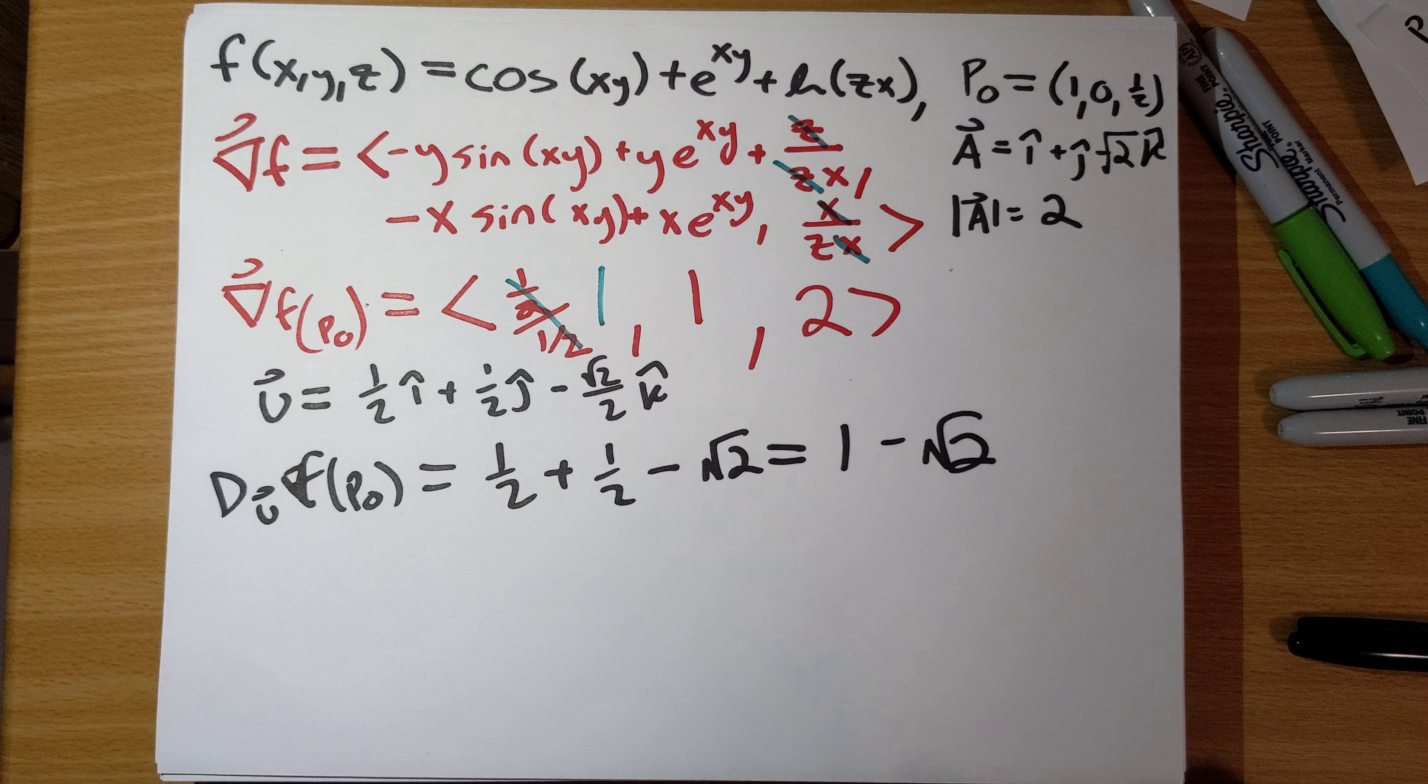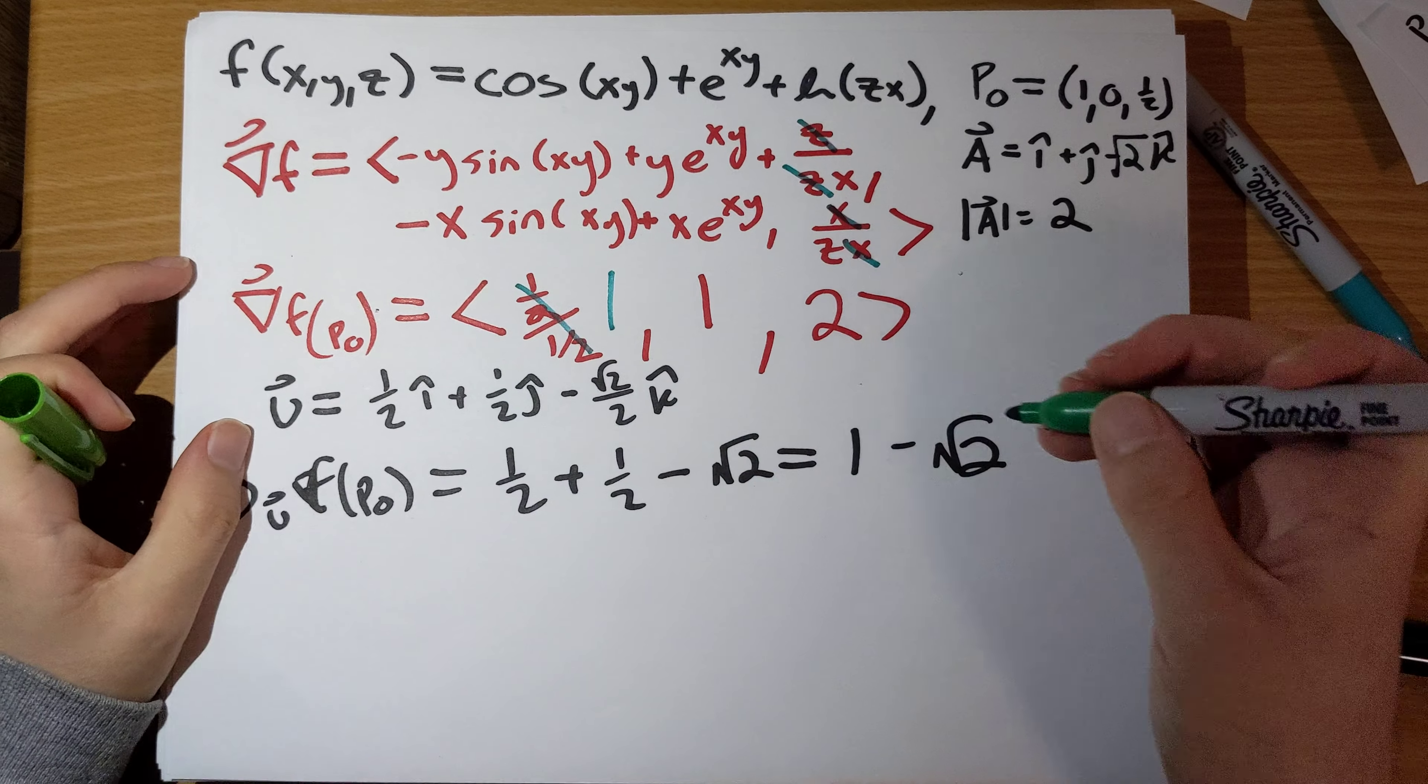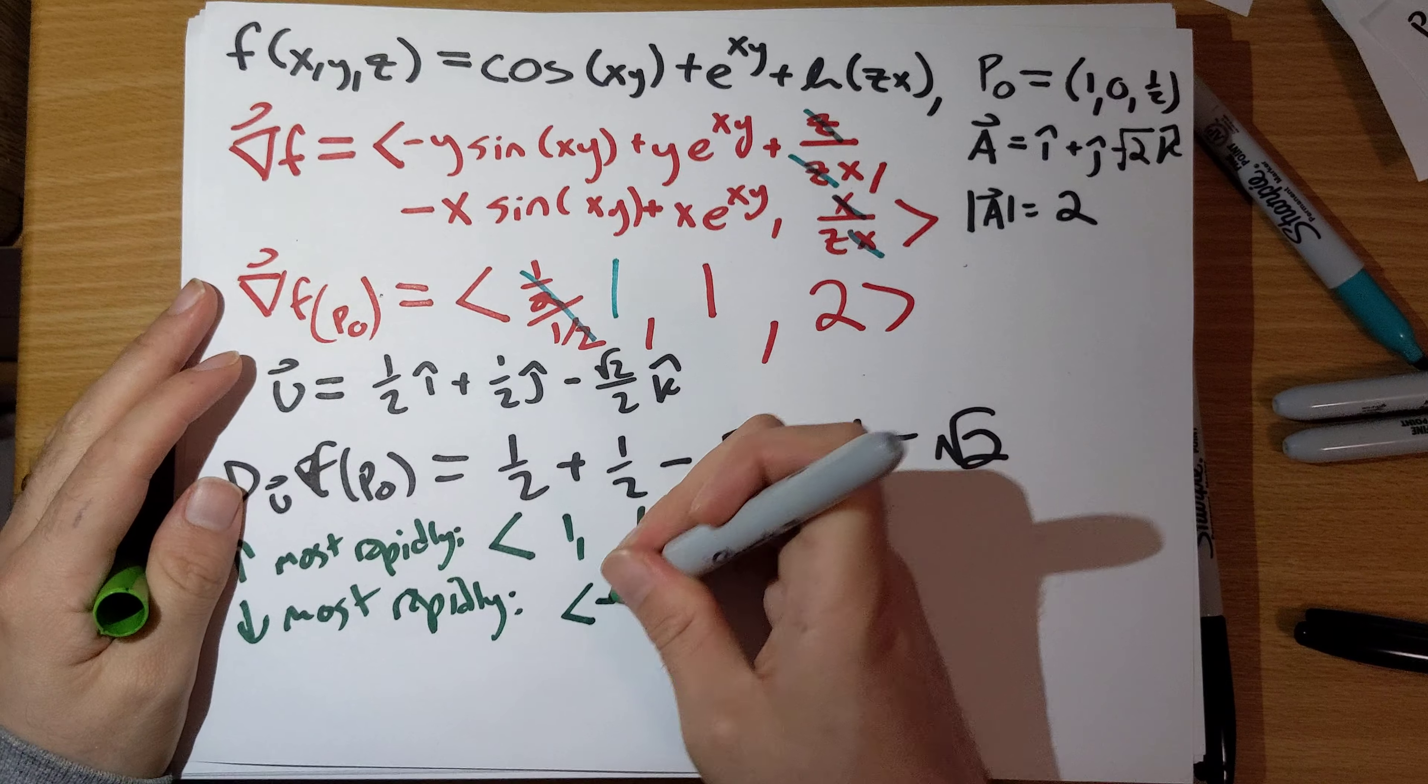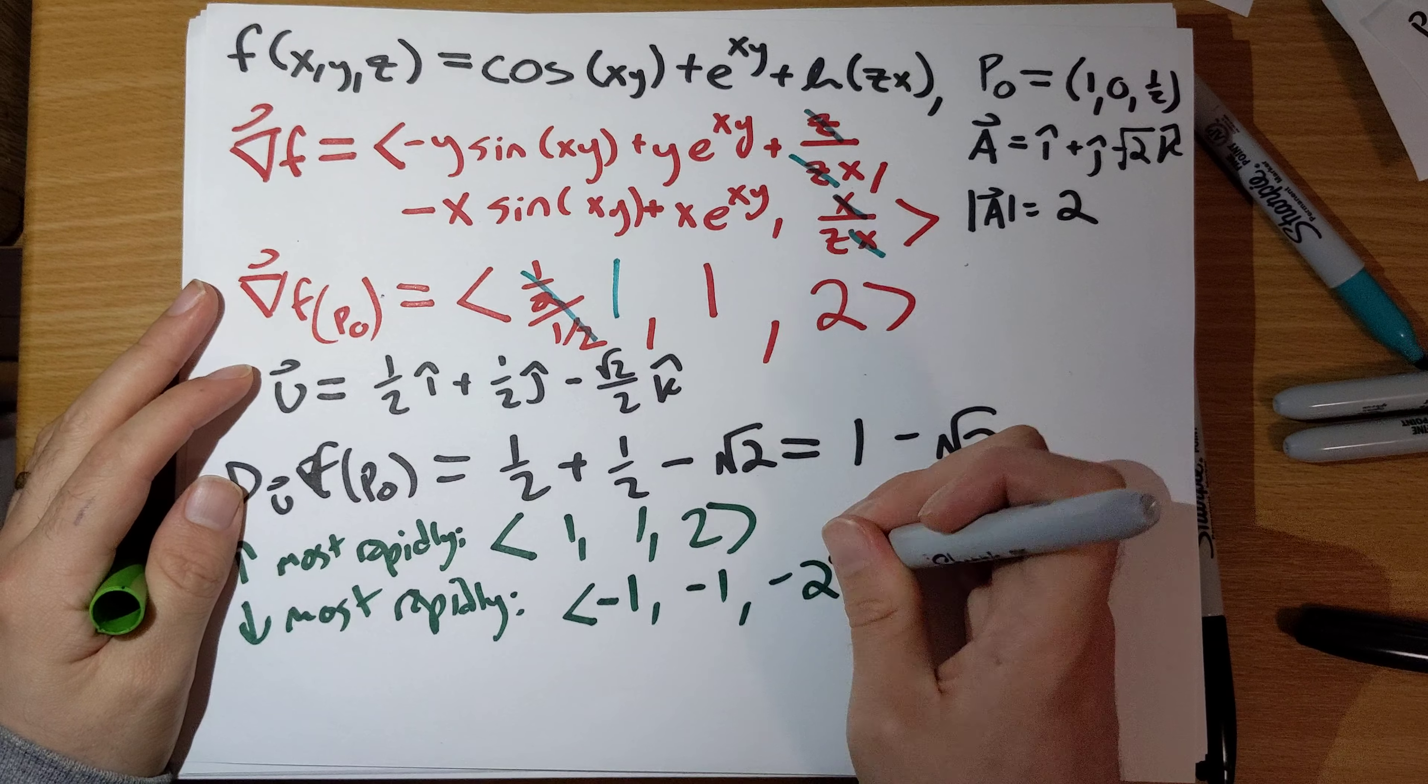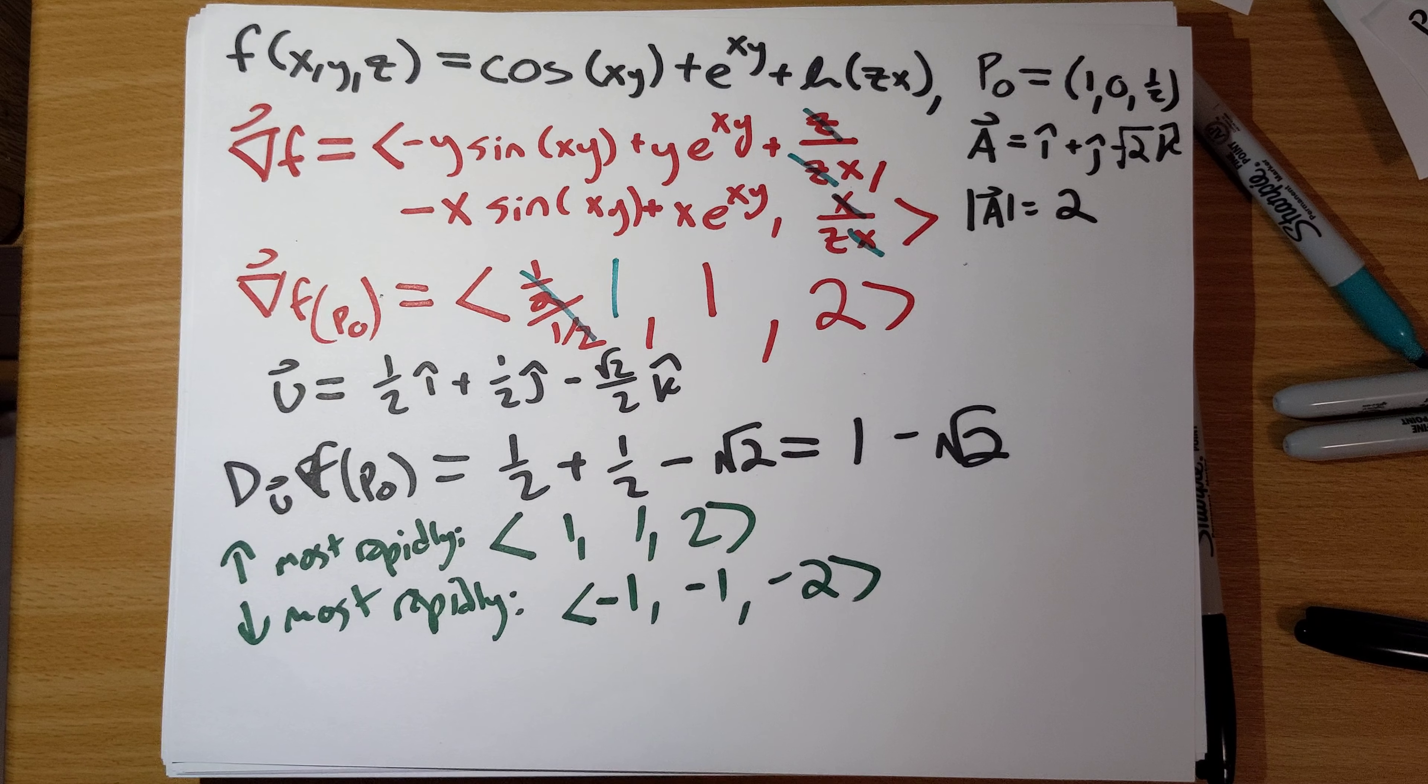Part B says, in what direction does f decrease most rapidly? So the thing to realize here is that the gradient at p-nut gives you the direction at which your function increases most rapidly. So increase most rapidly is the vector 1, 1, 2, decrease most rapidly is the negative of this, negative 1, negative 1, negative 2.